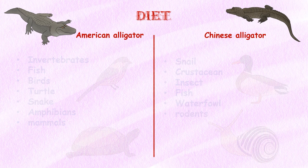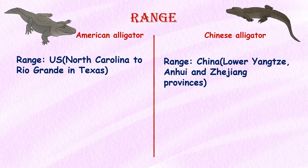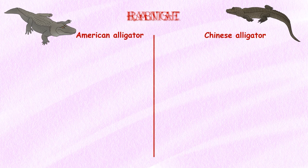Range. The American alligator is found in the United States from North Carolina to the Rio Grande in Texas. Chinese alligators are limited to the lower Yangtze River, primarily in the Anhui and Zhejiang provinces in eastern China.